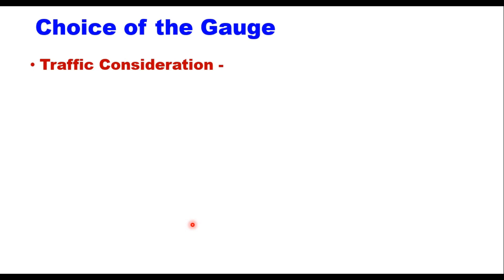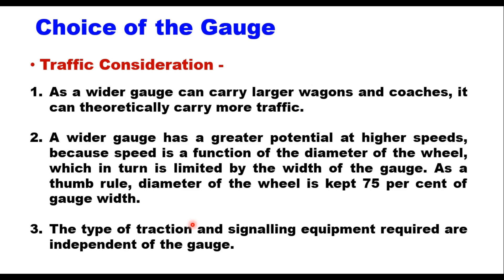The second consideration is traffic consideration — speed and volume. A wider gauge can carry larger wagons and coaches and can theoretically carry more traffic. A wider gauge also has greater potential for higher speeds, because speed is a function of the diameter of the wheel, and diameter of the wheel is a function of the width of the gauge. As a thumb rule, the diameter of the wheel is capped at 75% of the gauge width, and therefore more the diameter, more will be the speed of the train.